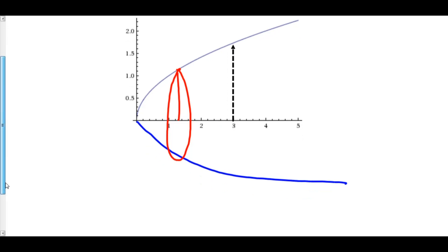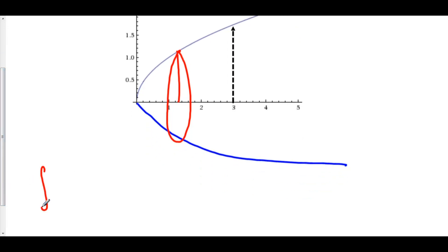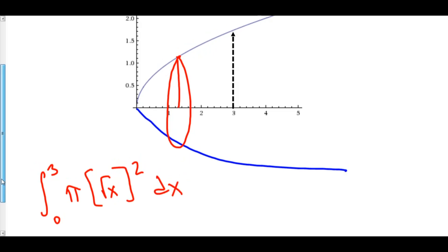Let's set up our integral. We've got the integral from 0 to 3 of the sum of our cross-sections. Our cross-sections here are circles, and the area of a circle is pi r squared. Our r here is the function value, which is the square root of x squared dx. And this is the setup of our integral.